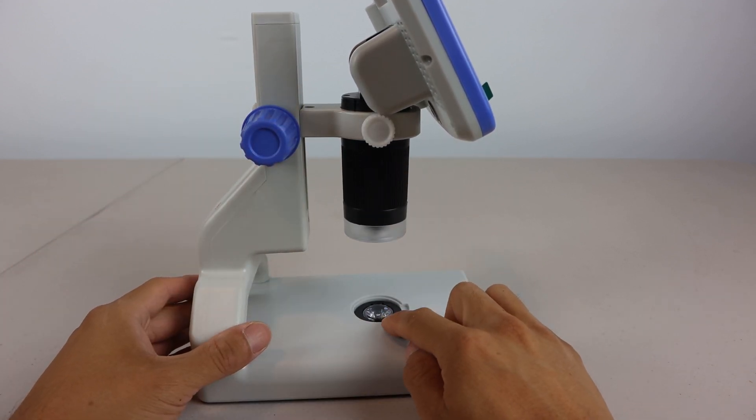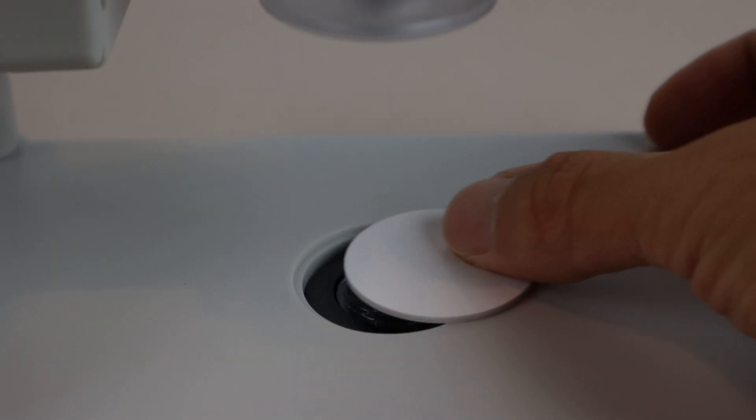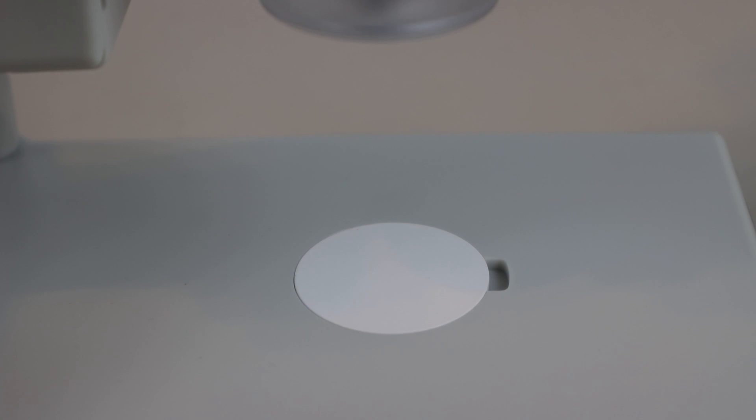Directly below the lens is the LED light source, which you can use with any of the three light filters to produce different images when viewing your slides.